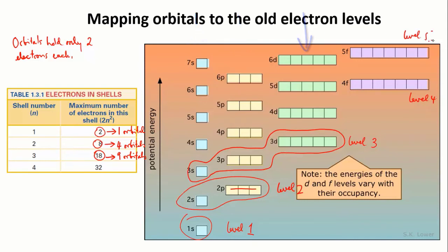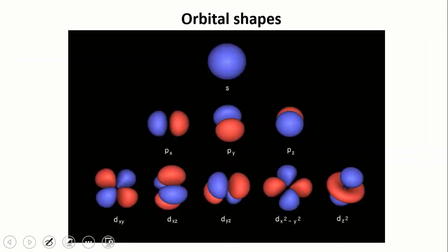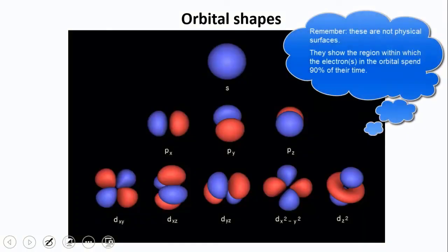The thing that all the orbitals of a particular type, all of the s orbitals, or all of the p orbitals, the thing that they all have in common is their geometry. It's not necessary for you to remember these shapes, but I think it's interesting to see them nonetheless. Remember that the surfaces of the shapes in this diagram just indicate the region within which the electrons in that orbital spend most of their time.